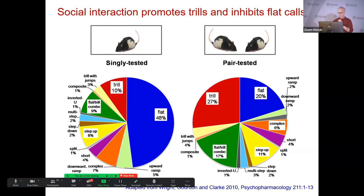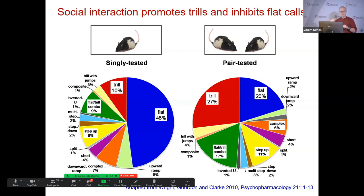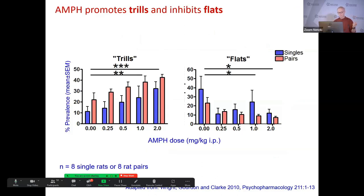We've seen a lot of pie charts today, and I think we need to say what we mean by how a pie chart is produced, because there are at least two ways. What we could have done is collected all the calls from all rats and then computed a pie chart — but the trouble is that some rats make 100 times more calls than other rats, so you'd be biasing it towards high-calling rats. What we do instead is compute a pie chart for each individual rat and then combine them together. Ours is a rat-weighted measure rather than a call-weighted measure.